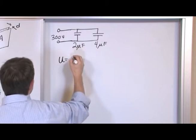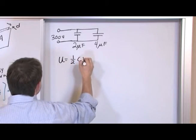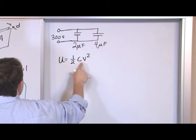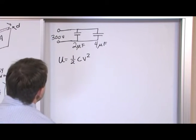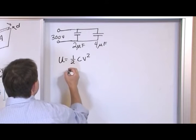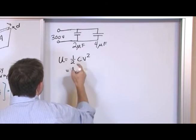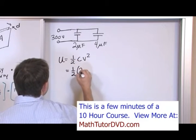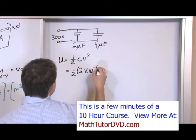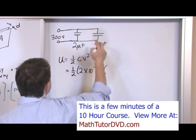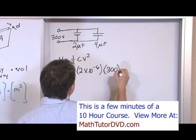So energy in a capacitor in general is U = 1/2 CV². We would use this form because we know the capacitance and we know the voltage. And since we know the voltage across both it's going to be 1/2. This capacitance is 2 × 10^-6. The voltage across this is 300 volts squared.